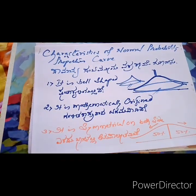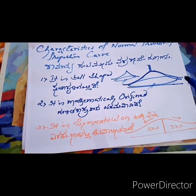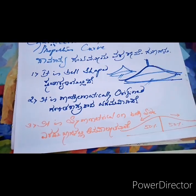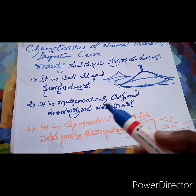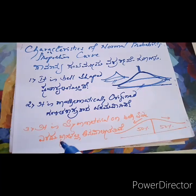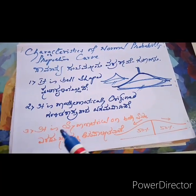The second one is it is mathematically originated. Usually this kind of shape we will get in statistics, because statistics is a branch of mathematics, that's what we call it as mathematically originated.